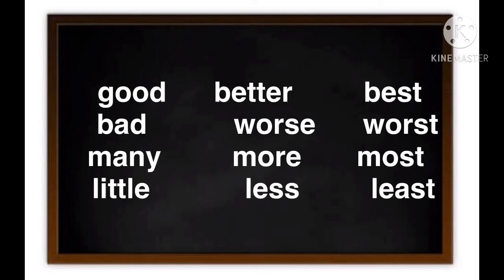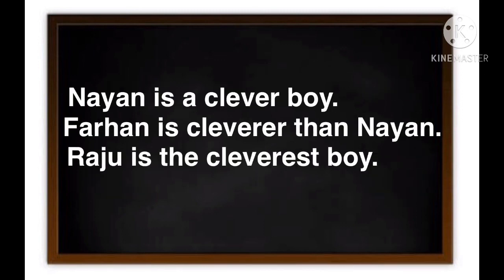Now let's see examples of how to convert a positive sentence into comparative and superlative degrees. Nayan is a clever boy—clever is the positive degree. Farhan is cleverer than Nayan—cleverer is the comparative degree. Raju is the cleverest boy—cleverest is the superlative degree.